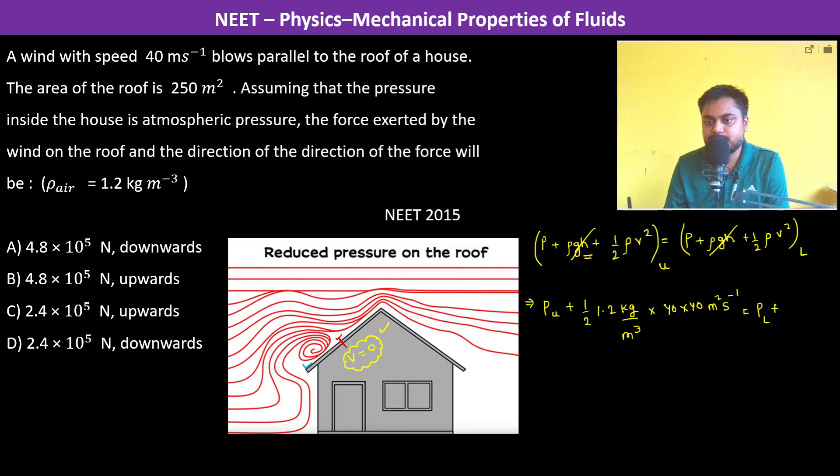So we have plus zero. So therefore clearly we have P_L minus P_U is equal to - and let us do this. So this is 0.6.